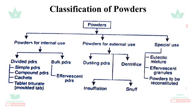Powders for internal use are divided into two types: bulk powders and divided powders. Bulk powders include effervescent powders. Divided powders include simple powders, which contain only one medicament, and compound powders, which contain more than one medicament. These are called wafer capsules and tablet triturates, which are molded tablets. Powders for external use are dusting powders, dentifrices, insufflations, and snuffs.